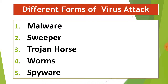I want to make it clear that sweeper, trojan horse, worms, spyware, and virus are all forms of malware. So malware is the umbrella term. If I say my system has been attacked by malware, you can understand it means my system has a virus, sweeper, trojan horse, worm, or spyware — these are all further types of malware.